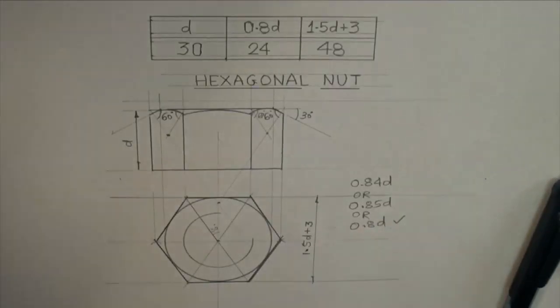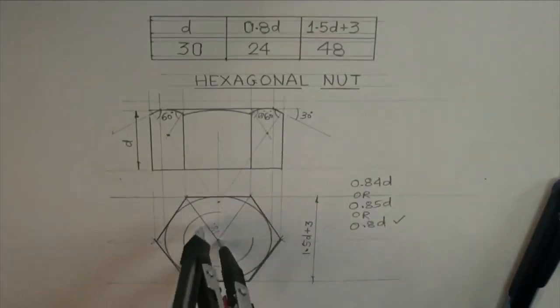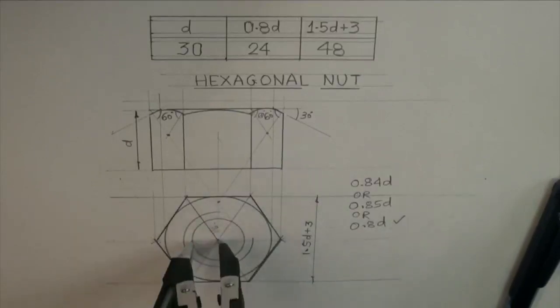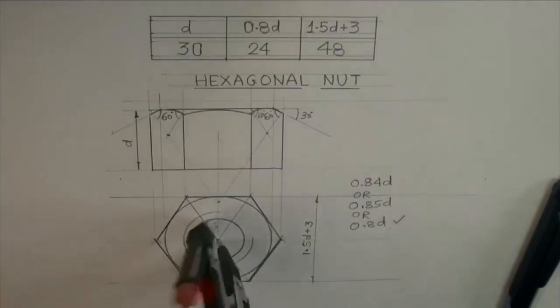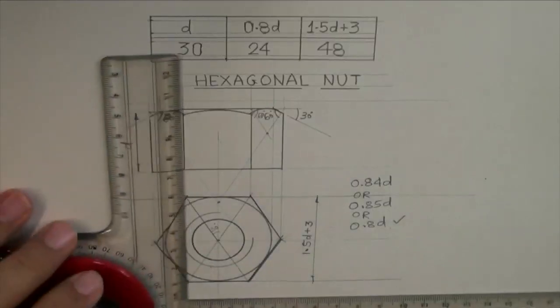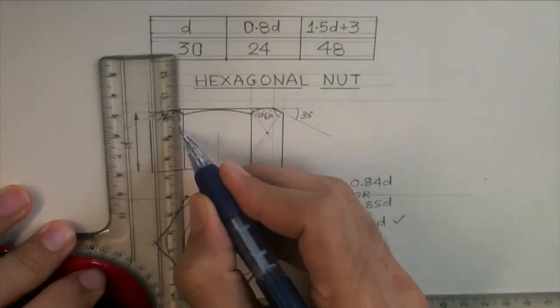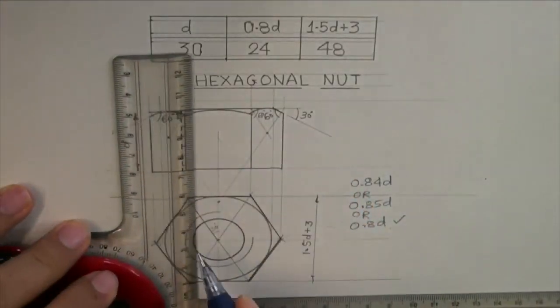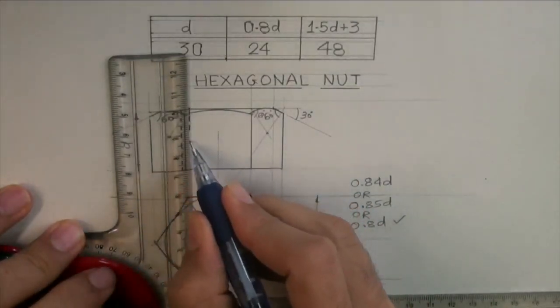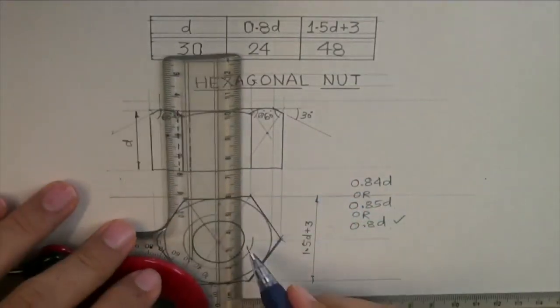But remember that 0.8D will be dark. In internal threading, inner circle will be dark, outer one 3 fourth will be slightly lighter than the inner one. Then you project front view, you will have 4 dotted lines.